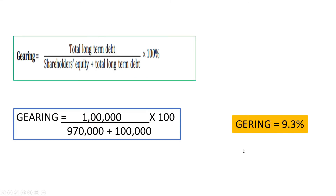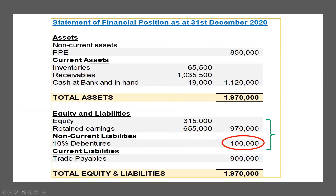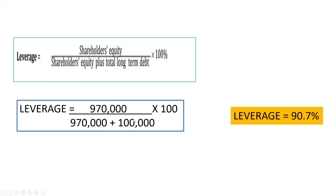Now let's move on to the leverage ratio. We need to take the equity capital as a percentage of total equity and debt. The shareholders equity is 970,000, and when you take 970,000 as a percentage of shareholders equity plus long-term debt, that gives you 90.7% as the leverage ratio.